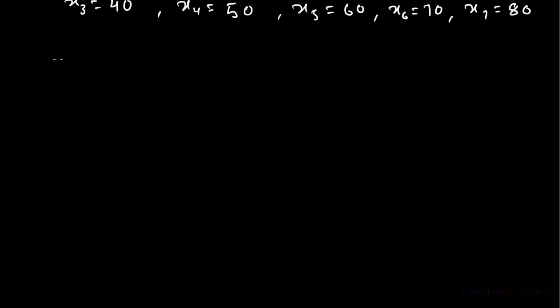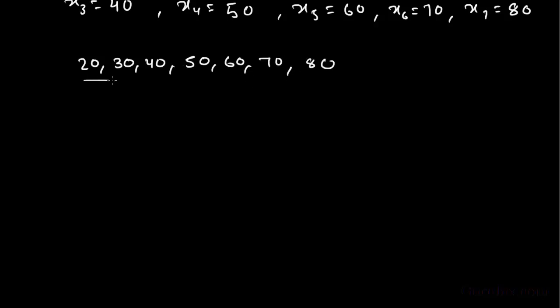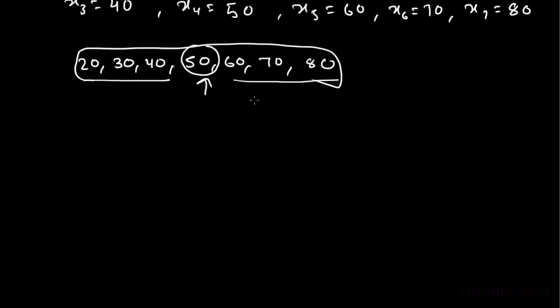Now, we have to choose a mean which is called assumed mean and denote it by 'a', which is the midpoint of xi — the midterm of the xi series. Our xi values are 20, 30, 40, 50, 60, 70, and 80. The midterm of this series is 50. We can see 50 in the middle of the xi's, so a is equal to 50.